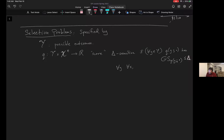In other words, for all y and for all x and x prime that are in X^n and that are neighbors, we should have that q(y,x) minus q(y,x') in absolute value is at most delta. This is the requirement we will have on our score function.